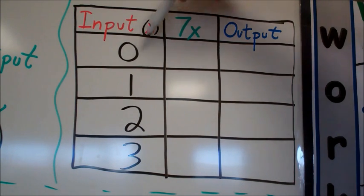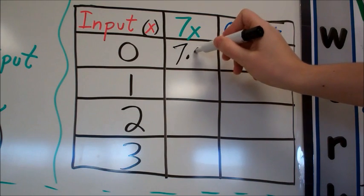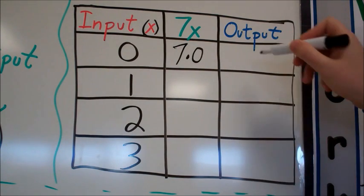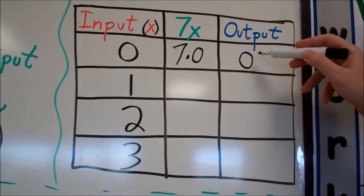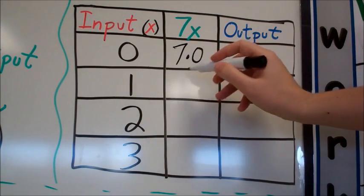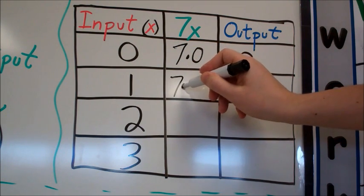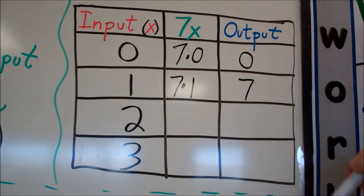We're going to substitute 0 in for x here. So we have 7 times 0. 7 times 0 is 0. So for this machine, when we put in 0, we're left with 0. Now we're going to put in 1. 7 times 1 is 7. We put in 1 to this machine and 7 came out.